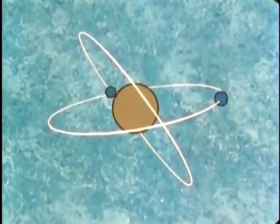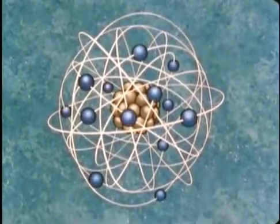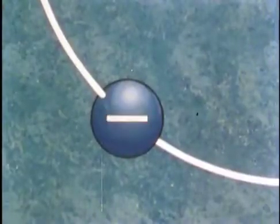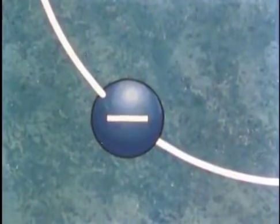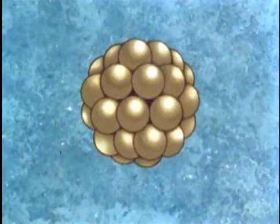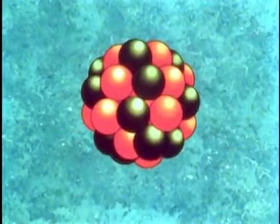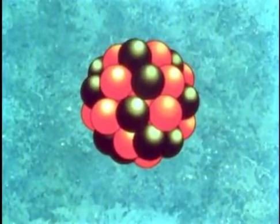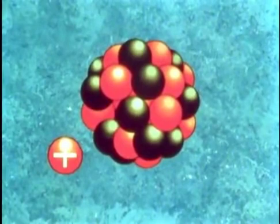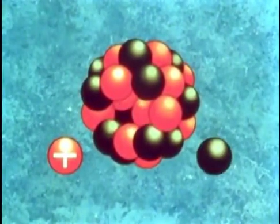Different substances have different numbers of electrons revolving around the nucleus. Electrons carry a negative charge of electricity. That central blob, the nucleus, is made up of two sorts of particles: protons, which carry a positive charge of electricity, and neutrons, which have no electrical charge.